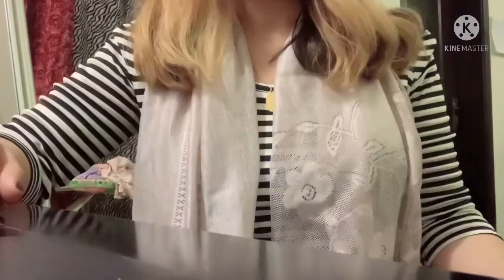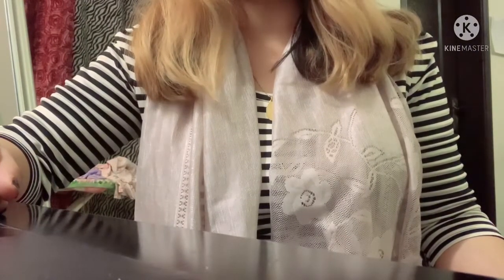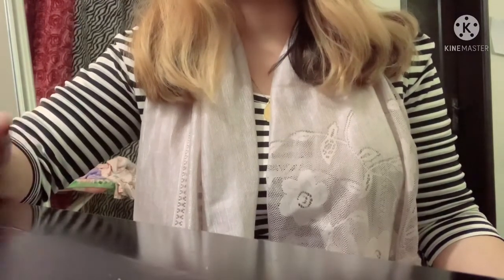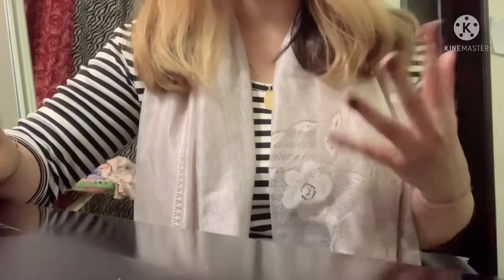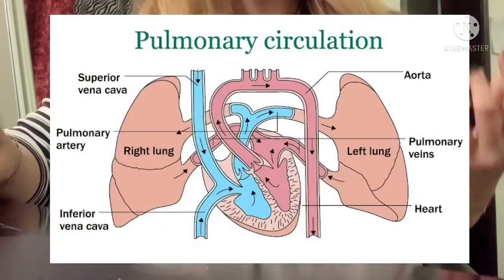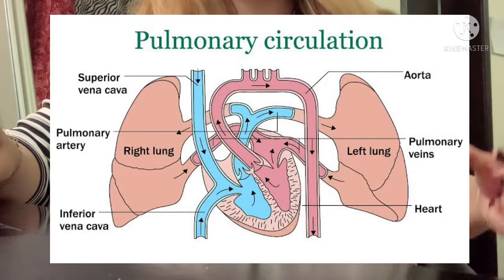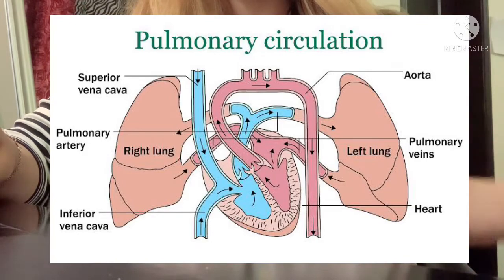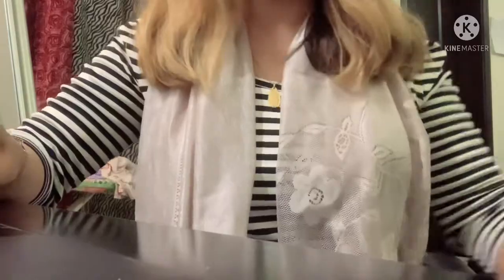The blood supply of the lung includes bronchial arteries — two on the left side and one on the right — which supply nutrition to the lungs. The pulmonary artery and pulmonary veins provide the functional blood supply: the pulmonary artery carries deoxygenated blood to the lung to get oxygenated, which is the main function of the lung, while the two pulmonary veins carry oxygenated blood away from the lung back to the heart. In the next video we will talk about the bronchial tree of the lung.